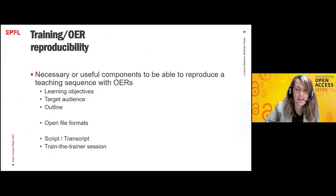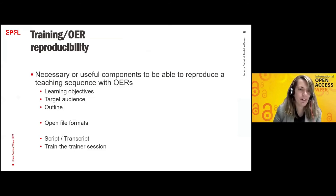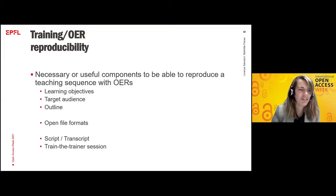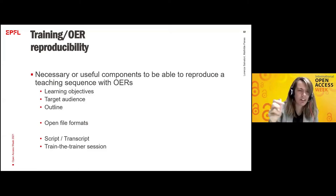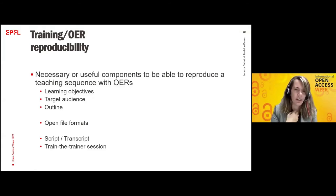I agree with the idea that you need to have copyright permission to reuse something — that's the first step. Then also the source material. I call it open file formats, because when source materials are open, it's much easier to reuse and readapt them. I divided the reproducibility part into three sections. First, you need to know what's in the training: the learning objectives, who the course is designed for, and an outline with duration and topics, which helps you decide if the resource is useful for you. It's like the abstract of the course.